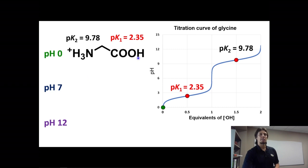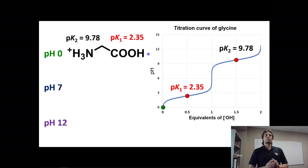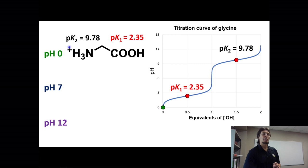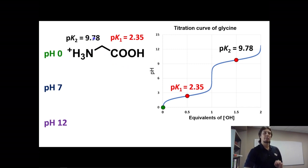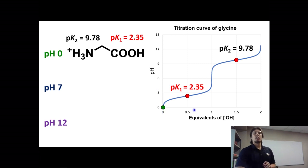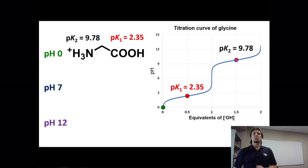Glycine is drawn in the fully protonated form at the top. In the fully protonated form, the amine group is actually an ammonium group with a positive charge, and the carboxylic acid is protonated with a neutral charge. The pKa of the amine is 9.78 and the pKa of the carboxylic acid is 2.35. We can draw a titration curve showing two pKa values — one at 2.35 for the carboxylic acid and one at 9.78 for the amine — with two plateau features indicative of a two-pKa molecule.